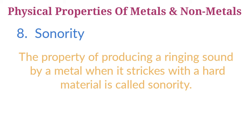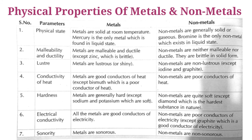These are the properties of metals and non-metals. In conclusion: metals are solid at room temperature; mercury is the only metal found in liquid state. Non-metals are generally solid or gaseous; bromine is the only non-metal which exists in liquid state. Metals are malleable and ductile, except zinc which is brittle. Non-metals are neither malleable nor ductile; they are brittle in solid form.